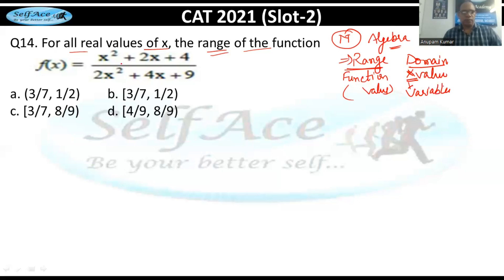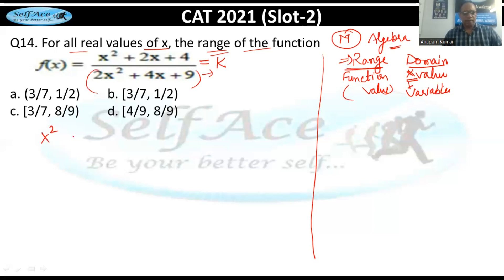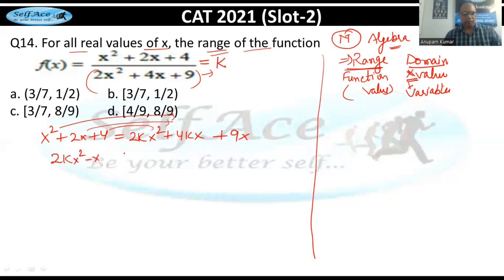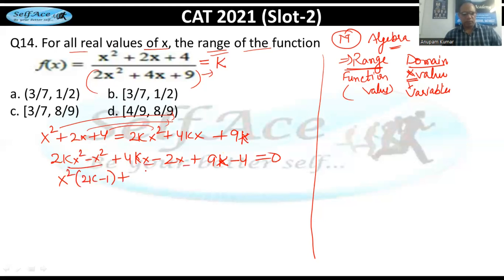Traditional method: let f(x) = k, then cross multiply. This gives x²+2x+4 = k(2x²+4x+9), which expands to 2kx²+4kx+9k = x²+2x+4. Rearranging: (2k−1)x² + (4k−2)x + (9k−4) = 0.